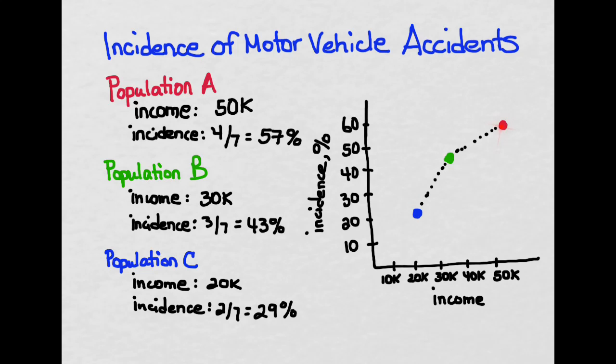We can see that there's a very nice relationship here between income and incidence. So the higher your income, the higher your incidence. There is a positive correlation here that's pretty strong between those two variables.